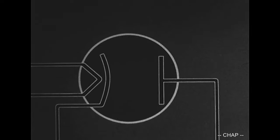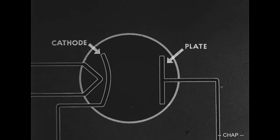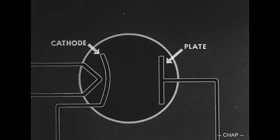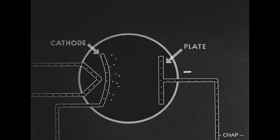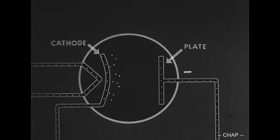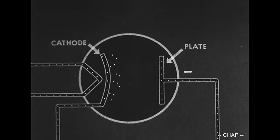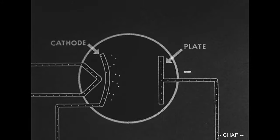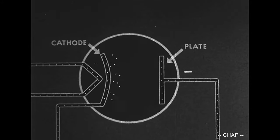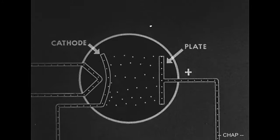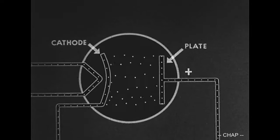When the cathode of a diode tube is heated by an electric current passing through the heater, electrons are driven out from the cathode. With the plate uncharged or of minus potential, these electrons stay near the cathode or return to it. However, if the plate is made positive it attracts the electrons. The electrons, being negative, rush to the positive plate at high velocity.